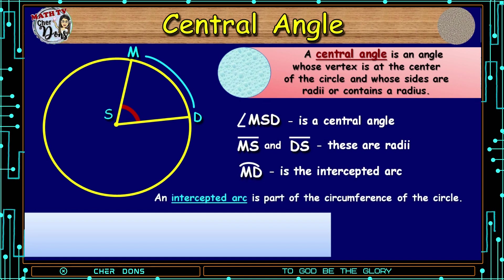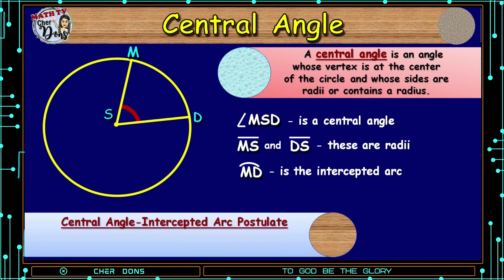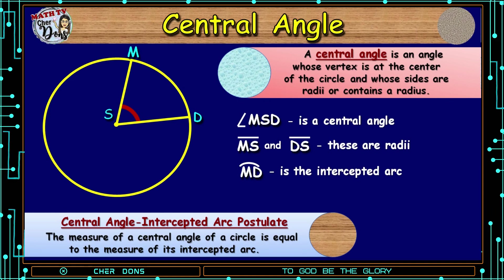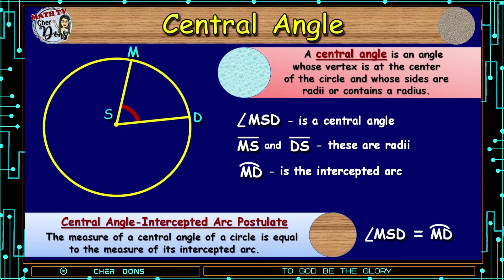An intercepted arc is part of the circumference of the circle. Let us move on to the Central Angle Intercepted Arc Postulate. The measure of a central angle of a circle is equal to the measure of its intercepted arc. It simply means that Angle MSD is equal to its intercepted arc, arc MD. So remember that they are equal.